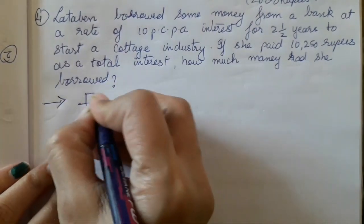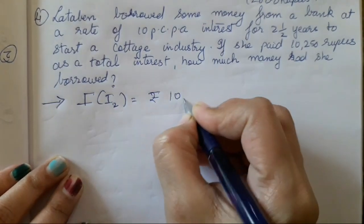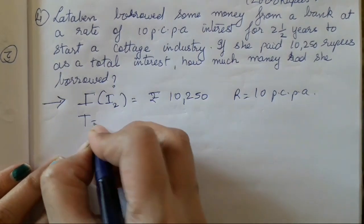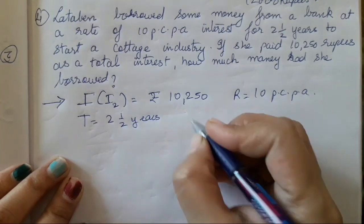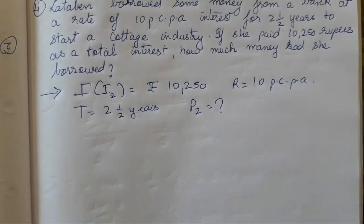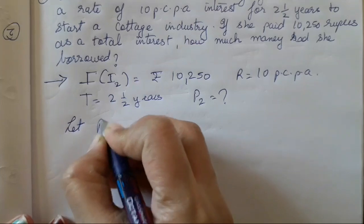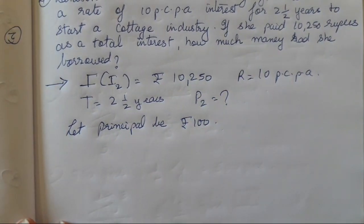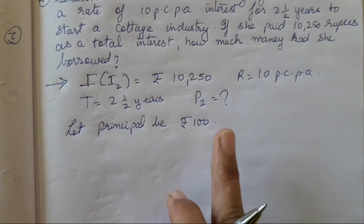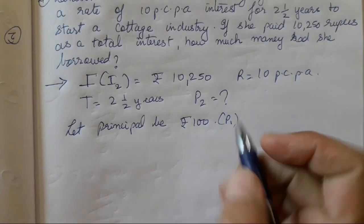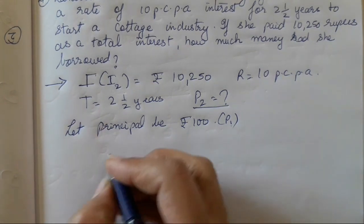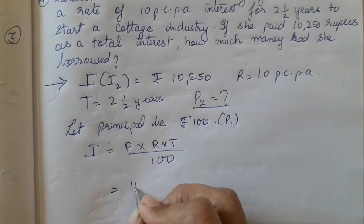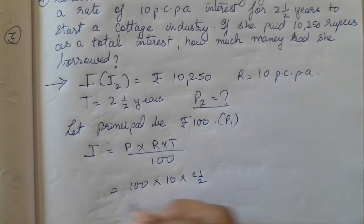Let's start with the solution. I₂ is rupees 10,250, R is 10% PCPA, T is 2 and a half years, and P₂ is what we need to find. Now let the principal be rupees 100 — we call this P₁. Why are we taking 100 rupees? Because we are not knowing the principal, that is why we are taking it as rupees 100. P₂ we need to find; P₁ we have assumed as 100.